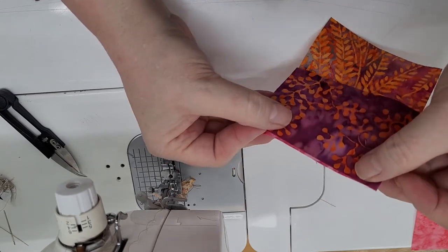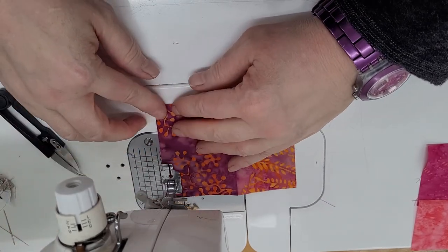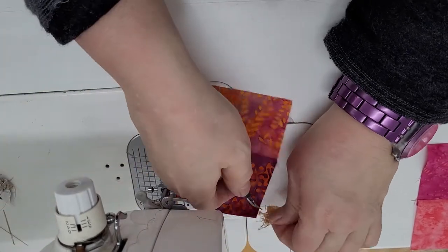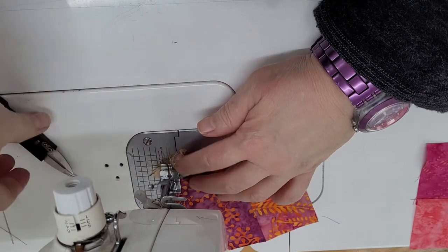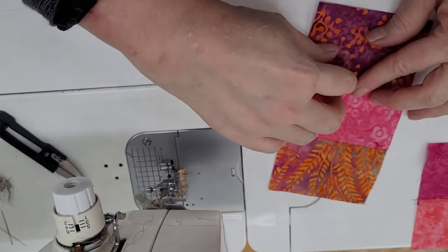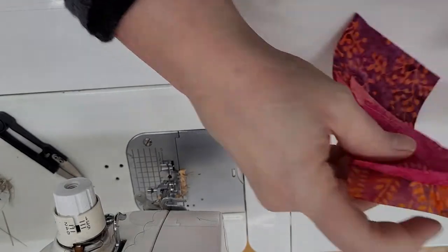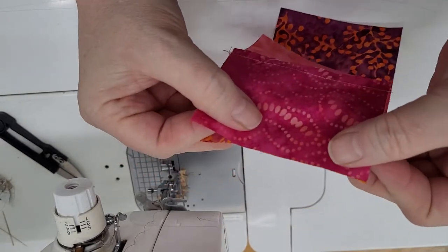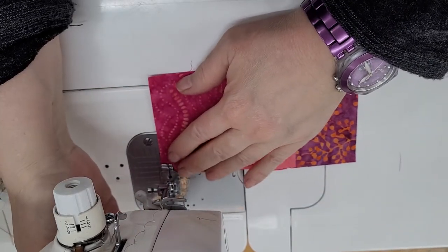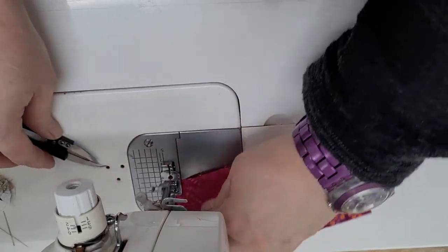Most batiks don't have a definite right and wrong side, so I would say, and actually even fabrics that do have a right and wrong side, use the side that has the color you want. So I've seen loads of quilts where people have used the wrong side of the fabric as the front of the fabric and it can be quite effective. I think that the rules we were bound by in the past are a little bit more flexible now.